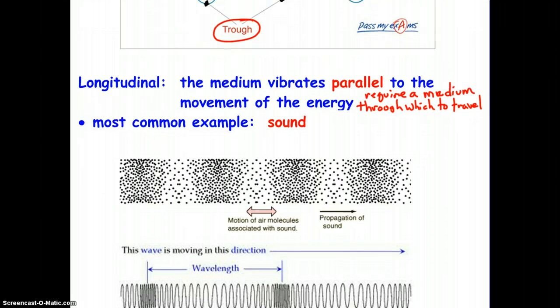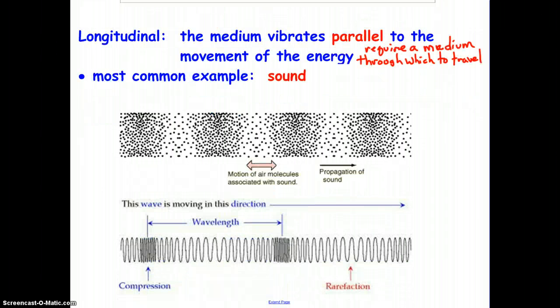A couple diagrams that we're going to take a look at that represent longitudinal waves and also sound. Our first one, this is the motion of air molecules associated with sound. You can see in the diagram here that the molecules of air are vibrating in the horizontal planes. Well, the energy that's traveling through the air, the sound energy itself, is also traveling in the horizontal plane. Since they're both vibrating and moving in the horizontal plane, they're parallel to each other. That's what makes this a longitudinal wave.